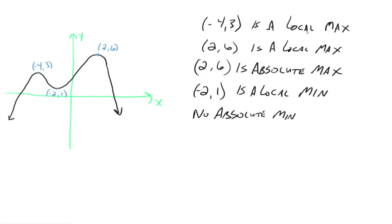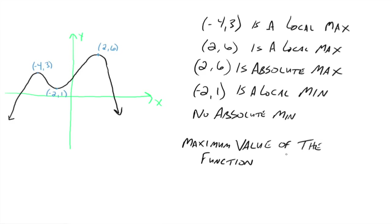Now there's one other idea: the maximum value of the function. The value of the function is the y part of the ordered pair. So if 2, 6 is the absolute maximum point on the graph, then the maximum value of the function is just 6 — the y part of that ordered pair. Some graphs will have maximum values, some will have minimum values, and some will have neither. We're looking for the ordered pairs for the local max and min, and the absolute max and min.